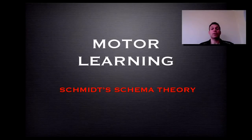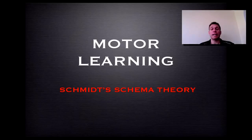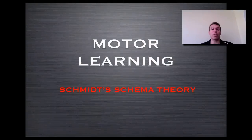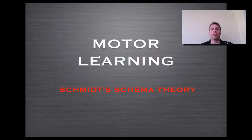We're going to talk about Schmidt's Schema Theory, just trying to explain how we learn and perform discrete perceptual motor skills. It was published in 1975 and goes slightly against the open and closed loop theories that we've discussed previously.